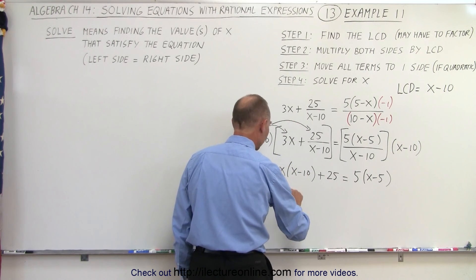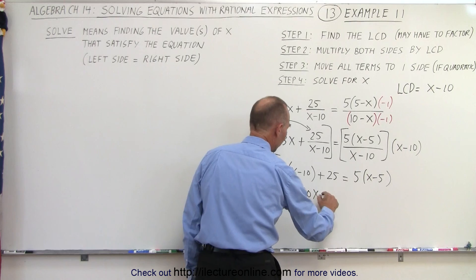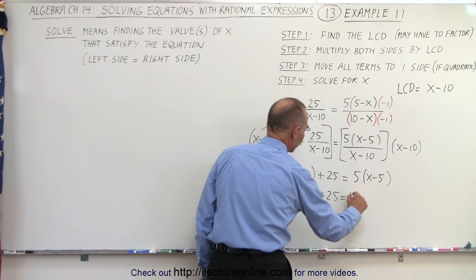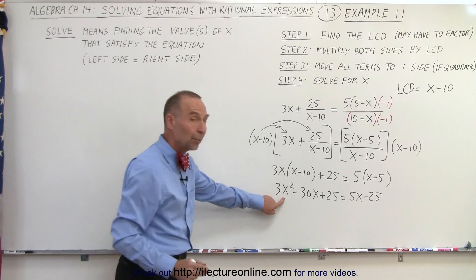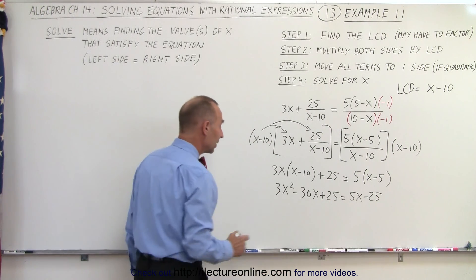So we have 3x squared minus 30x plus 25 equals 5x minus 25. And notice, I end up with a quadratic equation,